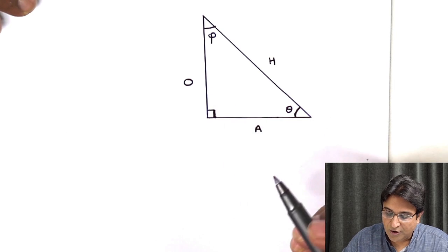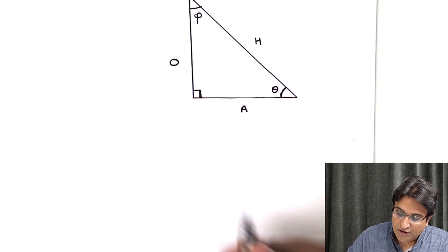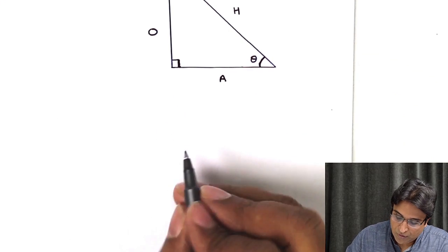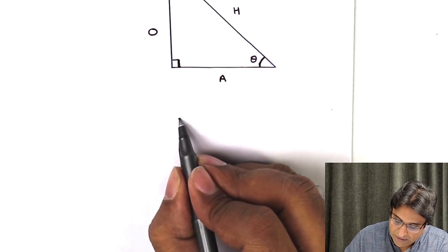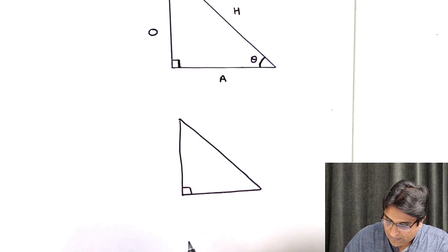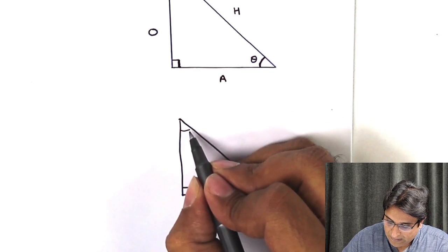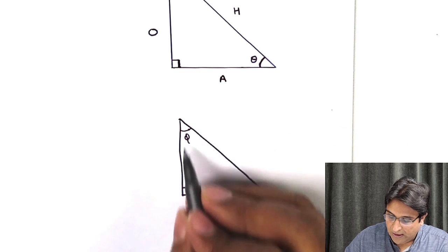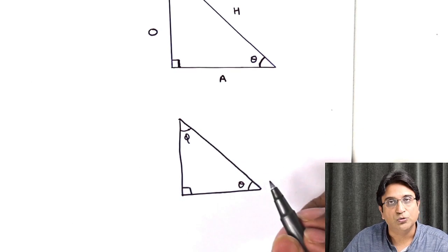Now, this whole arrangement could change if we choose a different angle. Okay? So, now suppose I say, okay, name all the sides and we say, okay, now phi is the angle that you have to choose.